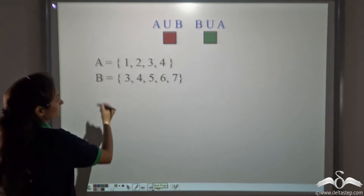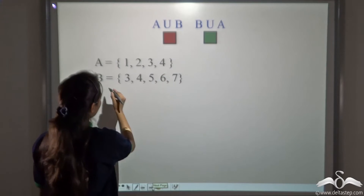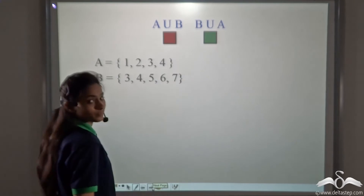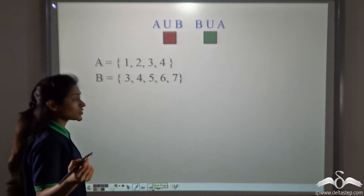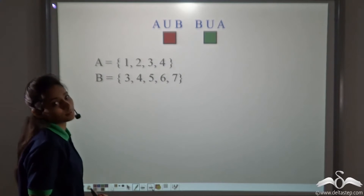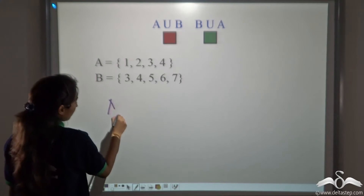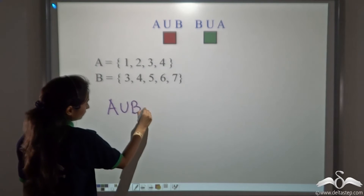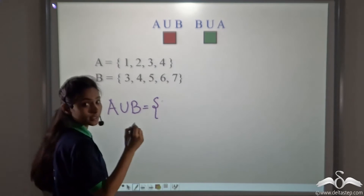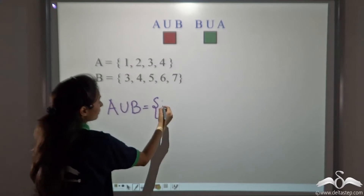Let me have two sets. Say A is {1, 2, 3, 4} and B is {3, 4, 5, 6, 7}. And I ask you to find out A union B. Now that's simple. A union B — what will it give me? Well, we write all the distinct elements in two or more sets, that is A and B.